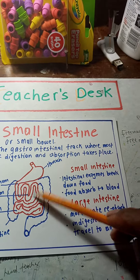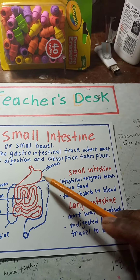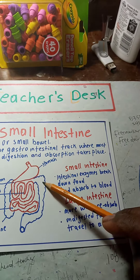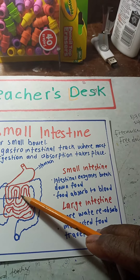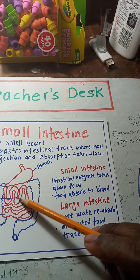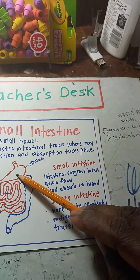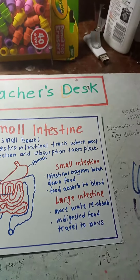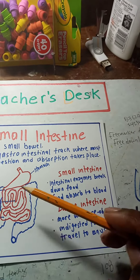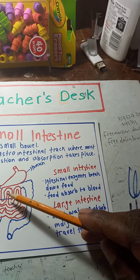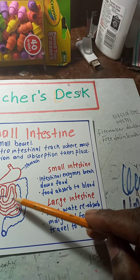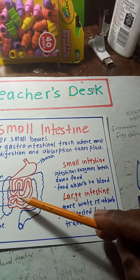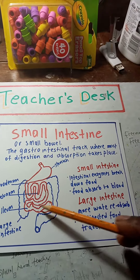You have the small intestines and the large intestines. 90% of digestion takes place in the small intestines — only 10% takes place in the stomach. After you eat, the food takes a long journey, moving all the way through the small intestines.